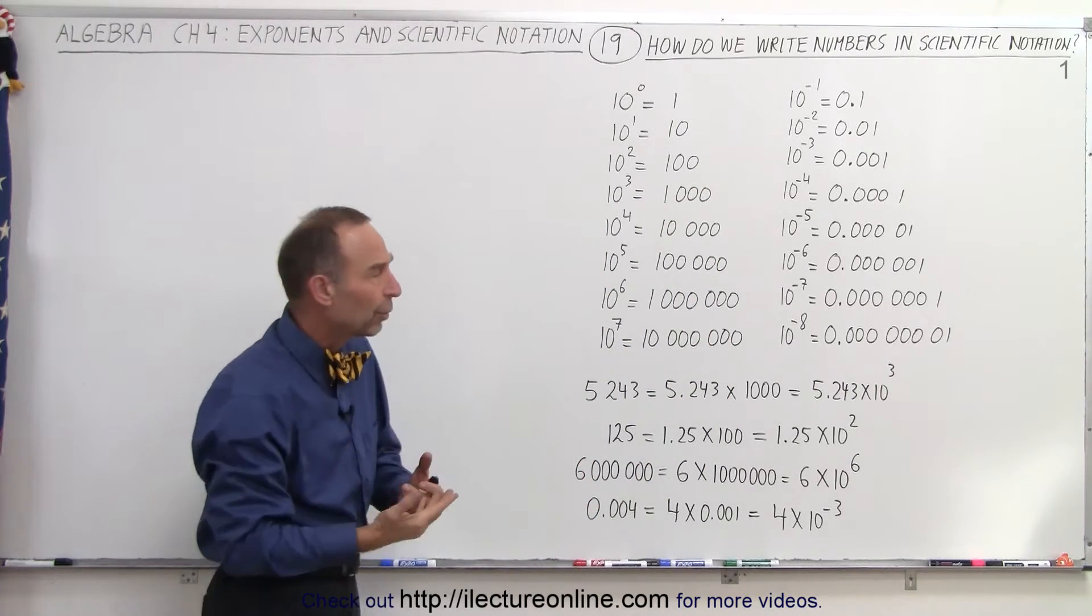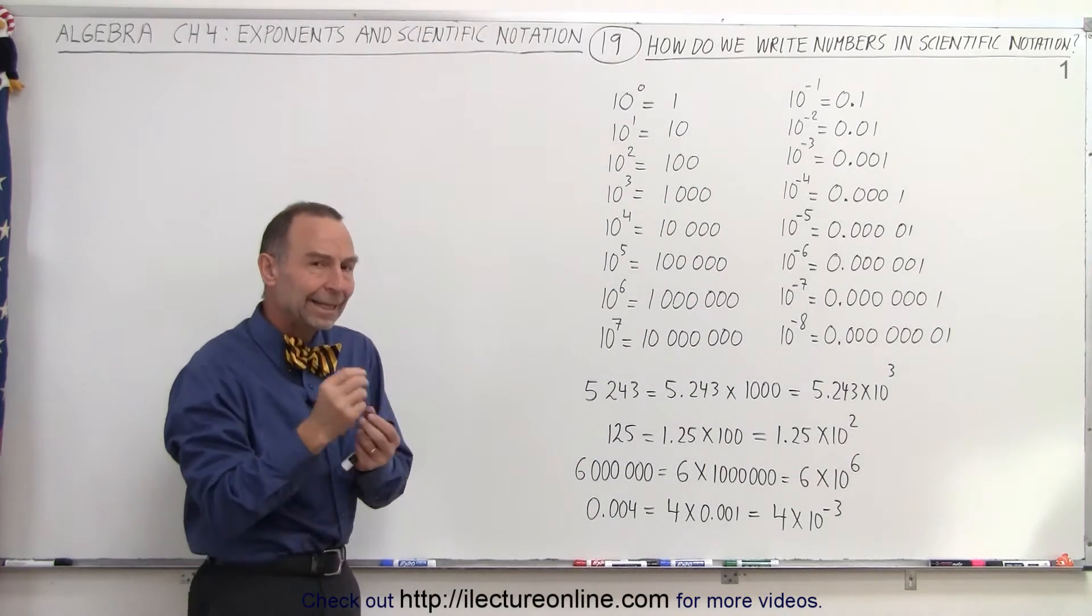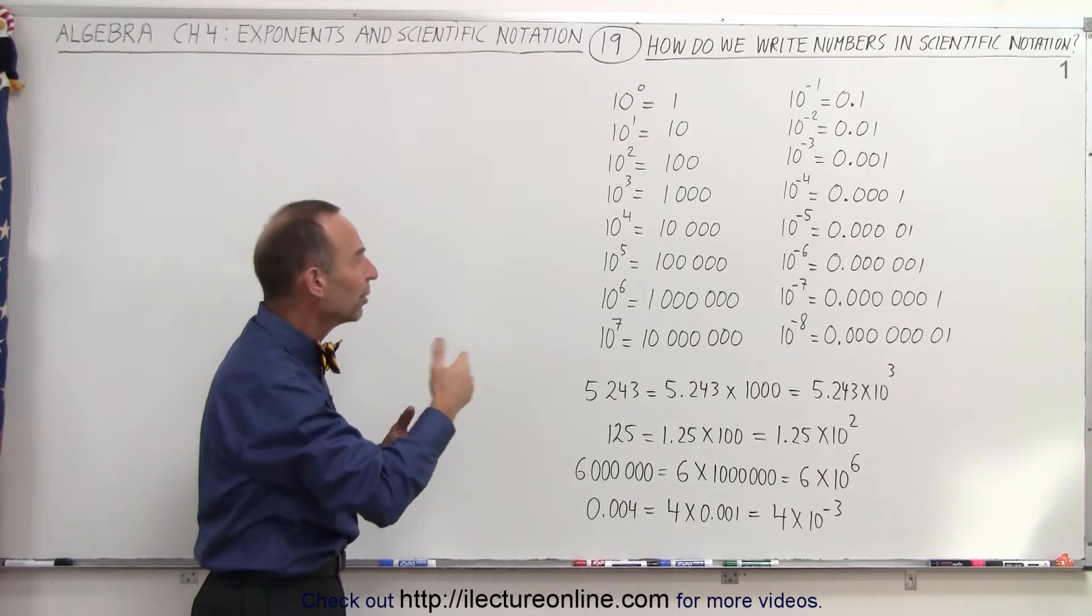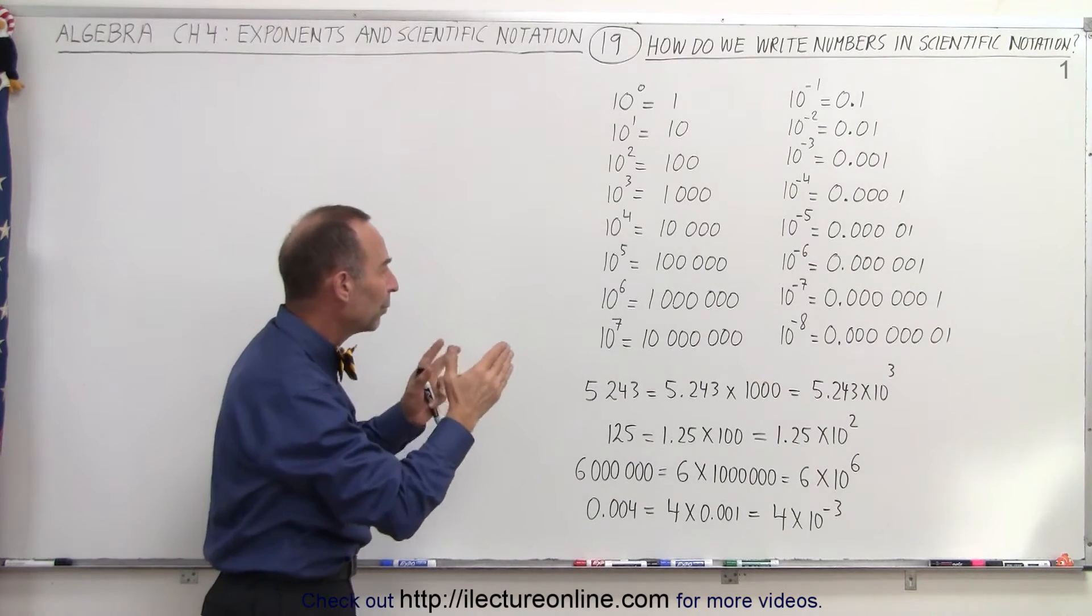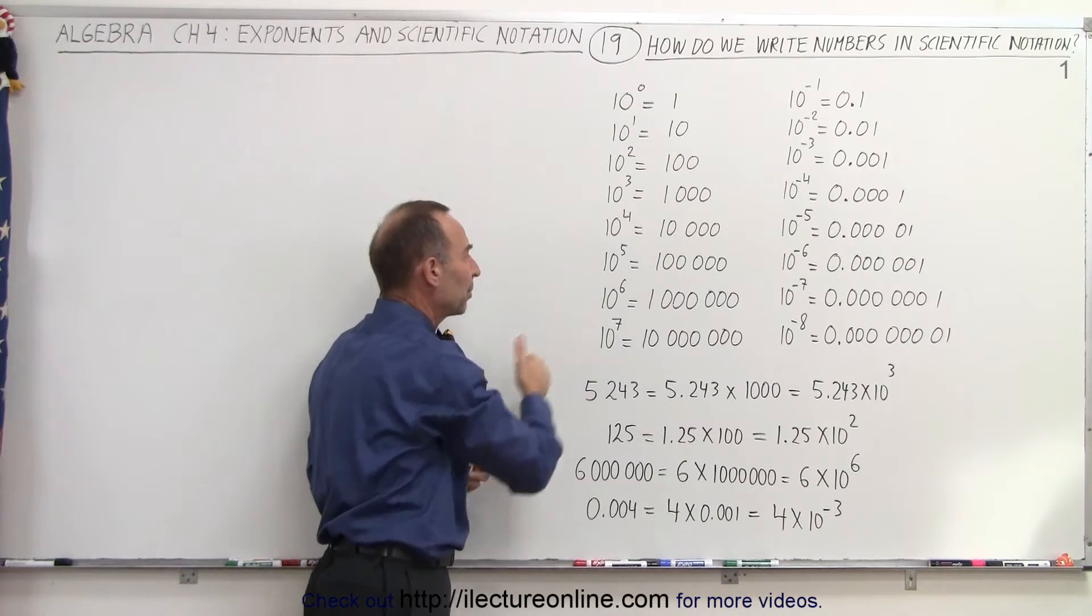So when we have 0 or a positive exponent, it indicates the number of zeros behind the number 1 and that will then represent that exponential format.